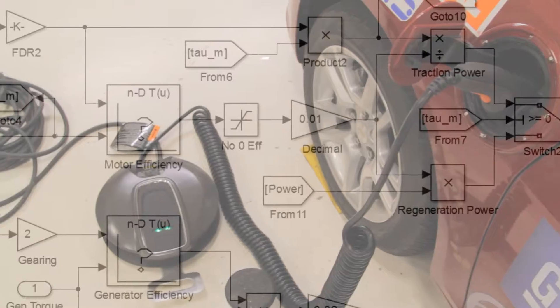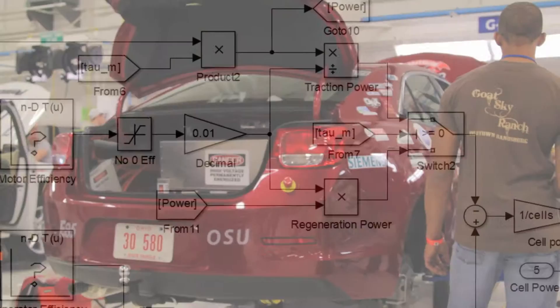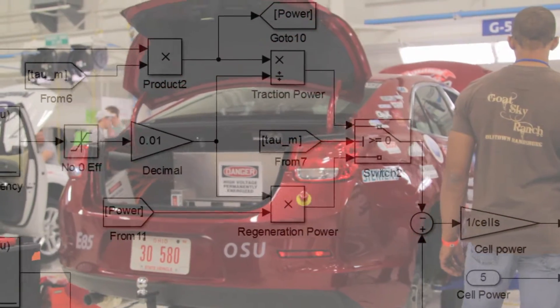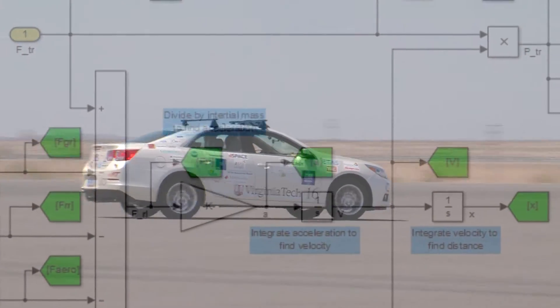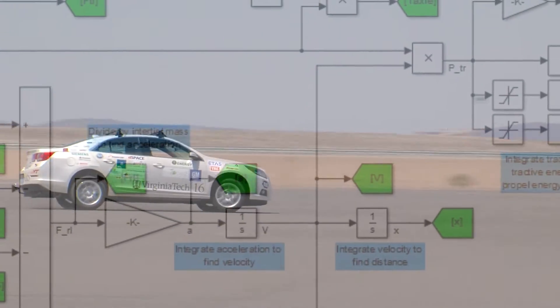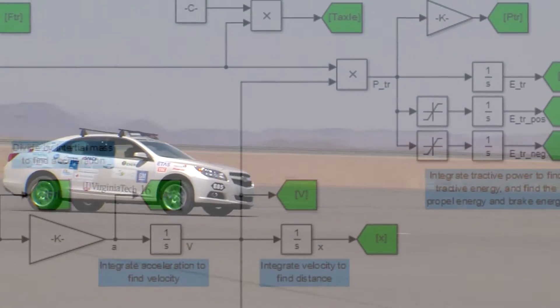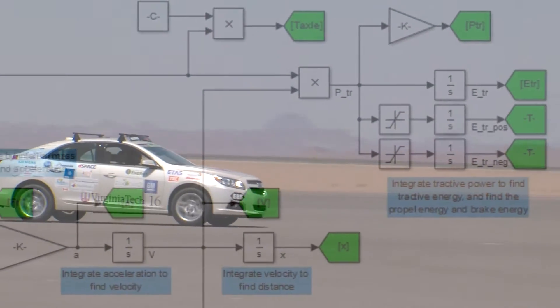The Ohio State University contributed a module on the series control of a hybrid electric vehicle — really the starting point for students to move into more advanced control techniques and architectures. Virginia Tech developed a set of component models that represent the losses as you translate energy from the wheels up through the transmission to the engine and hybrid systems such as motors and batteries.